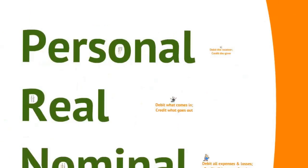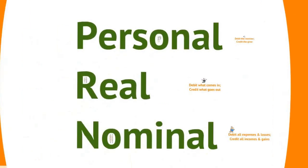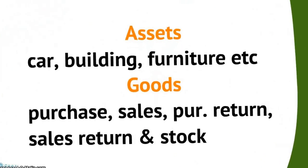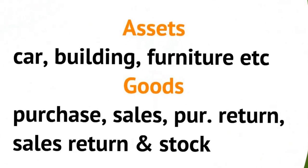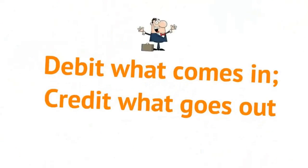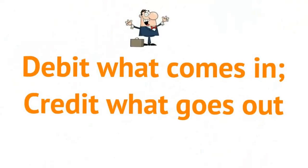In the real category, we include assets and goods related accounts. And the rule to record a real account is: debit what comes in, and credit what goes out.